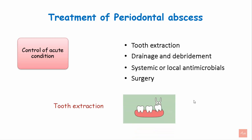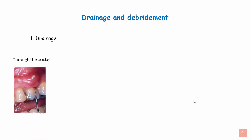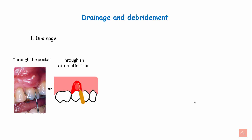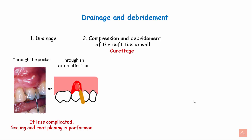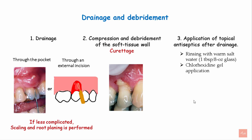Tooth extraction is indicated when the tooth is severely damaged with more than 75% bone loss and has a hopeless prognosis. The most effective therapy for treatment of periodontal abscess is drainage and debridement. Drainage can either be done through the pocket or through an external incision over the most fluctuant part of the periodontal abscess. If a less complicated lesion is seen, scaling and root planing is performed in the same appointment. This is followed by compression and debridement of the soft tissue wall by providing digital pressure and curettage using surgical curettes. The last step involves application of topical anesthetics after drainage. The patient is asked to rinse with warm salt water and application of chlorhexidine gel is indicated. It is important to carefully debride to eliminate any impacted foreign body within the periodontal tissues.